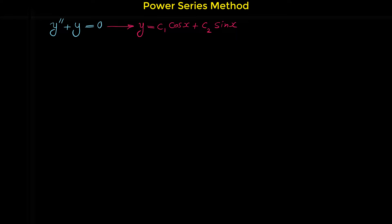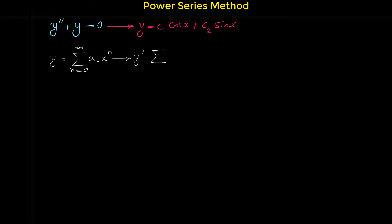First, we suppose y to be the solution of this differential equation and we suppose y to be equal to the power series sigma n from 0 to infinity of aₙ x to the n. From this we have to find y double prime. Y prime, the first derivative, is sigma of n aₙ x to the n minus 1, and we have to start n from 1 to infinity.